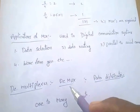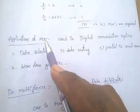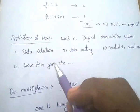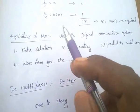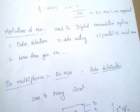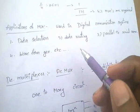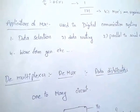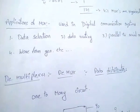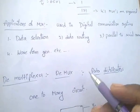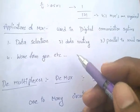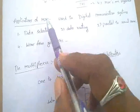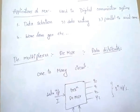The applications of multiplexers include digital communication systems, data selection, data routing, parallel-to-serial conversion, and waveform generation. BSNL exchanges also use a number of multiplexers because they are used in digital communication.